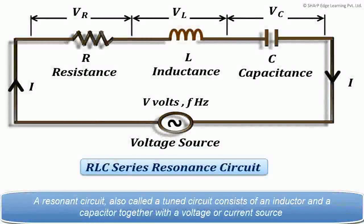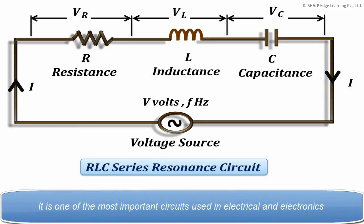A resonance circuit, also called a tuned circuit, consists of an inductor and a capacitor together with a voltage or current source. It is one of the most important circuits used in electrical and electronics.